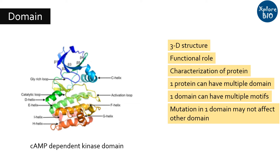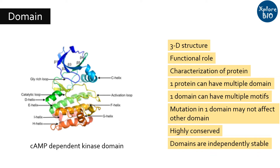Due to their functional significance, domains are highly conserved among species. A domain is formed by the formation of bonds like hydrogen bonds, disulfide bridges, and ionic bonds among amino acids to form a 3D structure. Therefore, a protein domain can be independently stable.